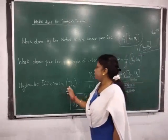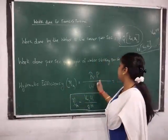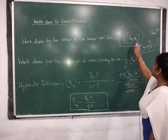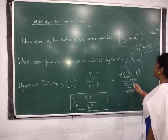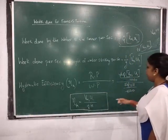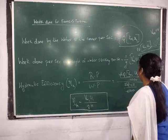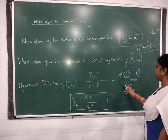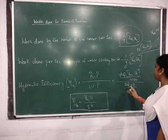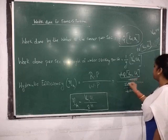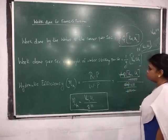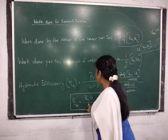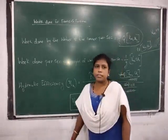Next is hydraulic efficiency. Hydraulic efficiency is nothing but runner power divided by water power. Runner power is rho into Q into V_W1 into U1, divided by 1000, and water power is rho into Q into g into H. After cancellation, hydraulic efficiency equals V_W1 into U1 divided by gH.